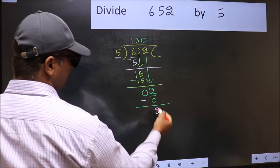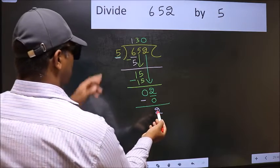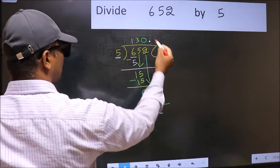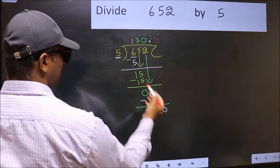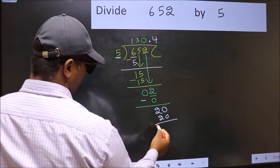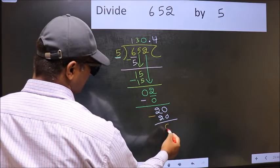Over here, we did not bring any number down. And 2 is smaller than 5. So now you can put dot and take 0. So 20. When do we get 20 in 5 table? 5, 4 is 20. Now you should subtract. 20 minus 20, 0.